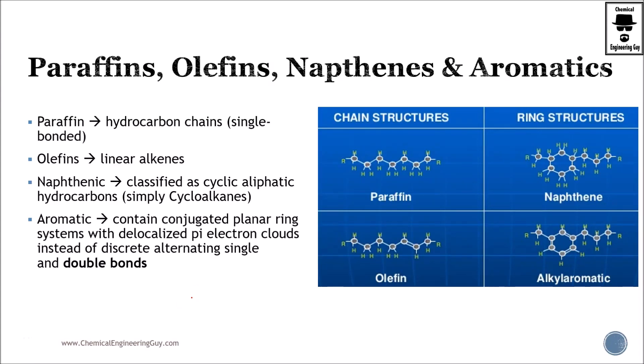Another classification that we have for petrochemicals are the following: paraffins, olefins, naphthenes, and aromatics. So why do we separate them? Because they have very unique physical and chemical properties.